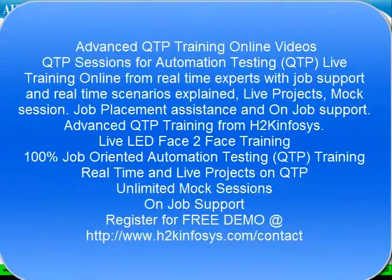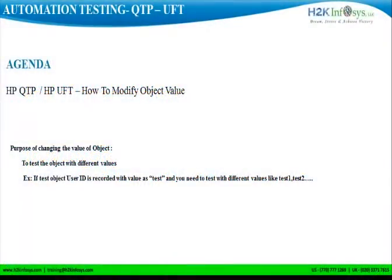For example, the object user ID is recorded with a value as 'test,' and suppose we need to test it with different values like test1, test2 — we obviously need to modify the object value. One advantage in UFT is that you don't need to record the whole script again.